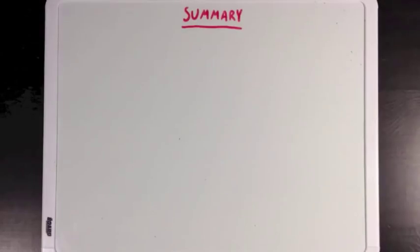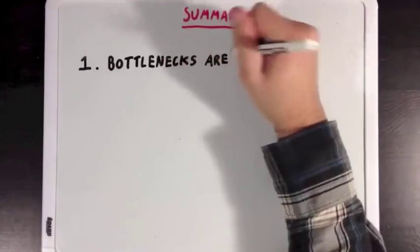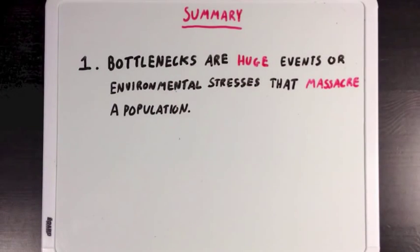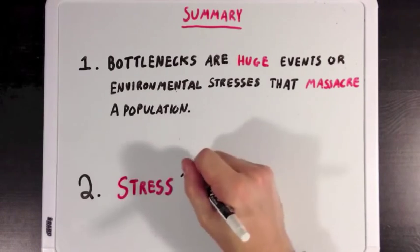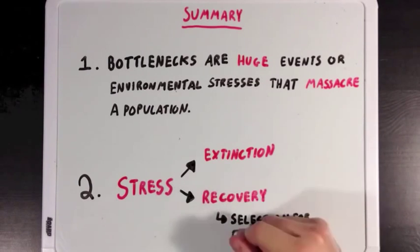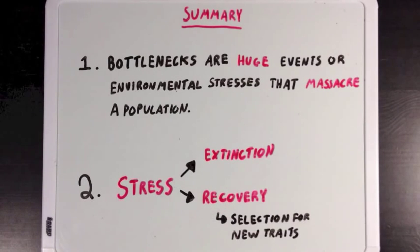So what did we learn? Well, first we learned that a bottleneck is an event or change in the environment that destroys a huge chunk of a population. But we also learned that following a bottleneck, a population can either go extinct if they're unable to cope with the change, or a small group can survive and the population will eventually recover. But it's important to remember that when a population does recover from a huge stress like a bottleneck, the gene pools in that population will change significantly.